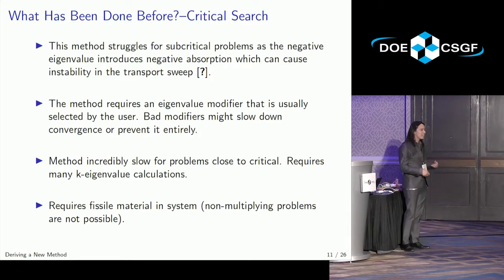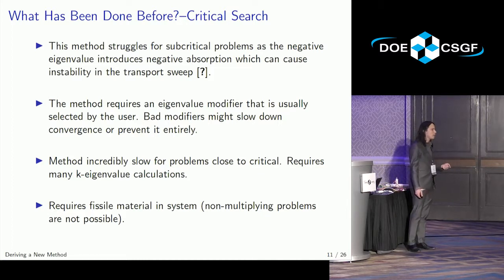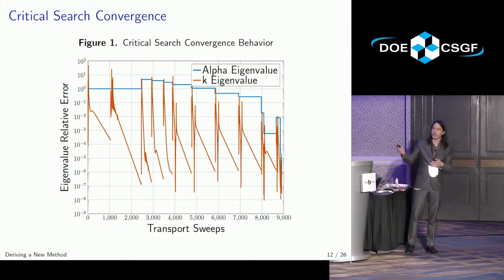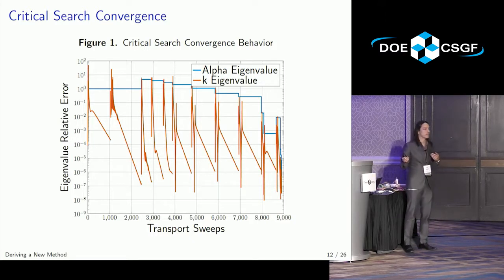So that should be avoided. The method also requires guessing, and anytime you let a user guess, that could get you into trouble because a really bad guess can devastate the ability of a method to converge. We should also avoid that. The method is also incredibly slow because you have to solve a preliminary eigenvalue problem multiple times. And so this is sort of what this convergence behavior for this method looks like, where the orange line is the k-effective eigenvalue solver, and the blue is the alpha eigenvalue solver. So you're doing a lot of work for not a lot of iterations of alpha.